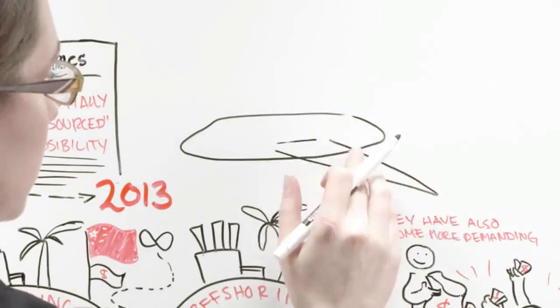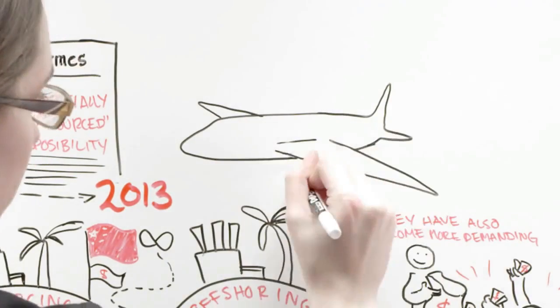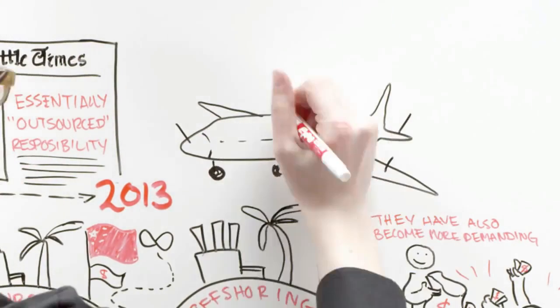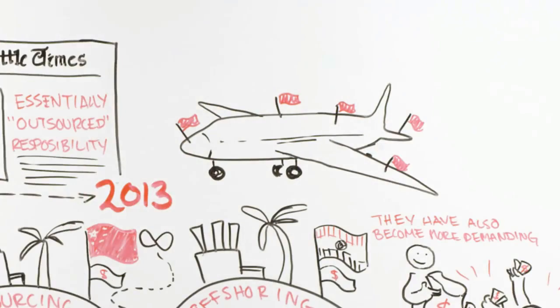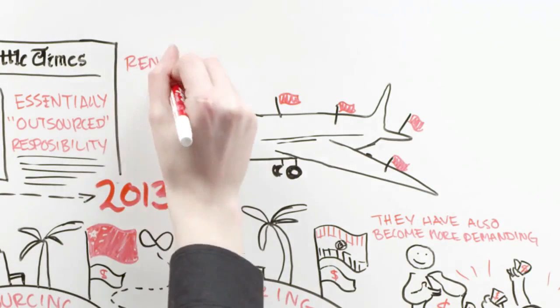Boeing is no stranger to outsourcing. On earlier jets, the company outsourced work on landing gear, batteries, and engines for the 777 and 737. Both planes are renowned for their reliability.